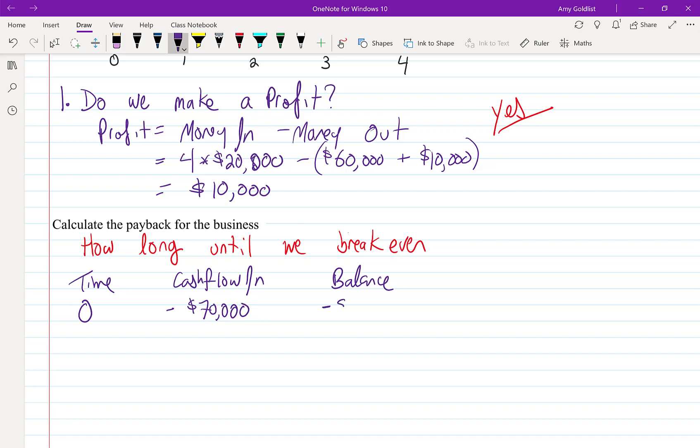At the beginning, we're investing $70,000 in the business, that's a negative because we're putting it in. Our overall balance is -$70,000. At Time 1, we make $20,000, which puts us up to -$50,000. We keep on going, put those in.